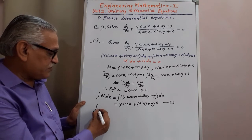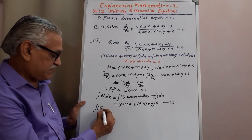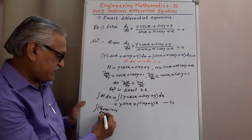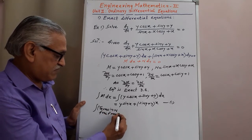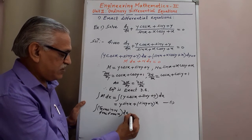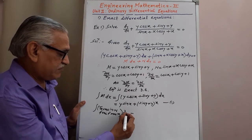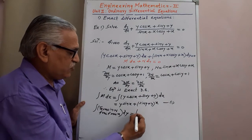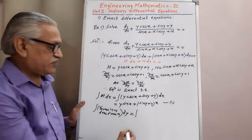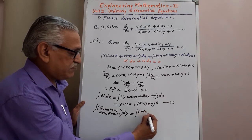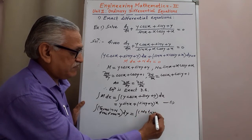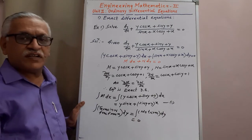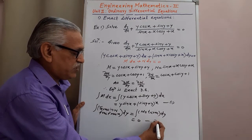In the second step, we look for terms in N that are free from x and integrate them with respect to y. Here, all terms in N contain x, so there is no term free from x, and therefore its integration with respect to y is 0. We call this equation 2.